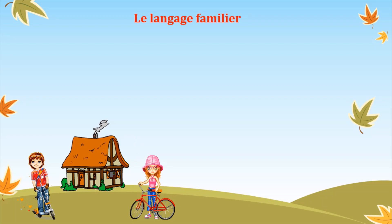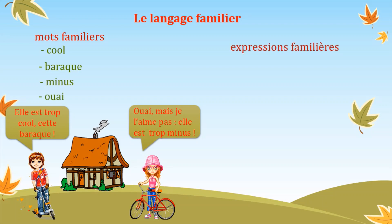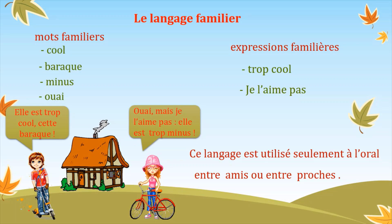Commençons par le langage familier. Suivez avec moi cette situation : « Elle est trop cool, cette baraque. — Oui, mais je ne l'aime pas. Elle est trop minus. » Comme vous voyez, on a utilisé comme mots familiers : cool, baraque, minus. Et comme expression familière : trop cool, je ne l'aime pas. Ce langage est utilisé seulement à l'oral, entre amis ou entre proches.